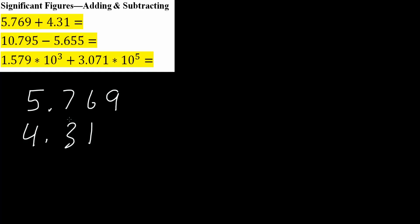Whenever we add and subtract significant figures, we determine it by the one with the lowest decimal places. So this has three right here, and this has two. And so our answer would only have two at the end.